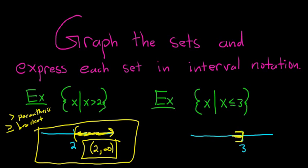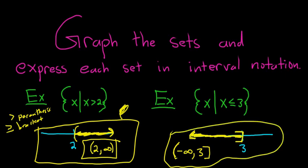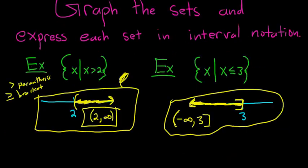The bracket faces the way we shade. It's less than 3, so we shade to the left. The parenthesis from the previous example also faces the way we shade — we shaded to the right. When reading the interval notation left to right: it goes off forever to the left, so we put negative infinity. Then a comma, then all the way to 3 with a bracket to include it: negative infinity, comma, 3 bracket.